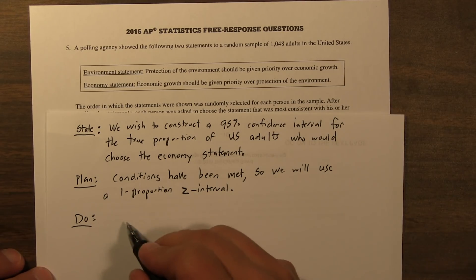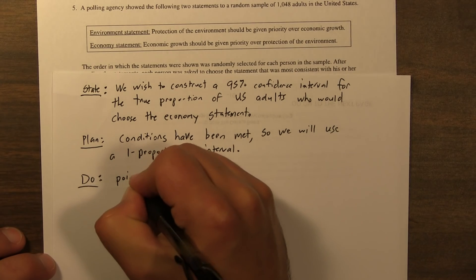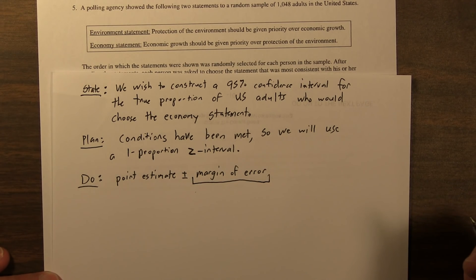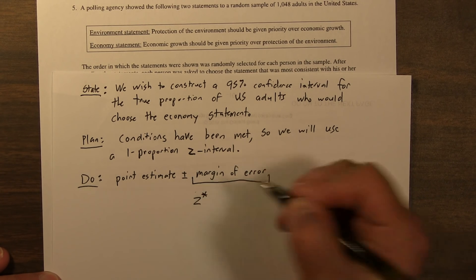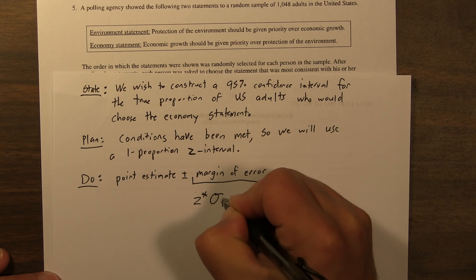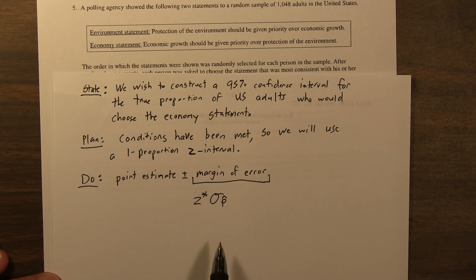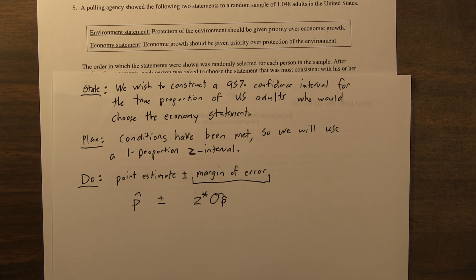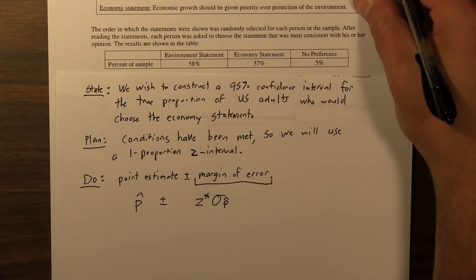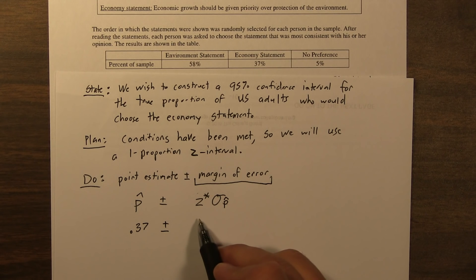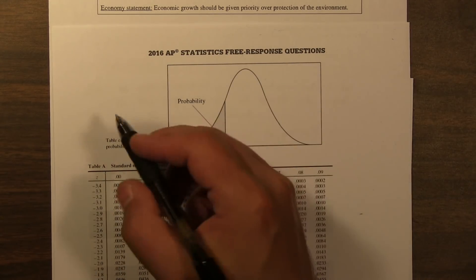Now for the do step. Every confidence interval is a point estimate plus or minus some margin of error. The margin of error breaks into Z star, our critical value, times the standard deviation of the p-hats. So this will be p-hat plus or minus the standard deviation from the sampling distribution. The economy statement proportion was 0.37. For our 95% confidence interval, we need to figure out what Z star is using a table.